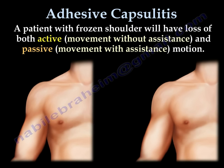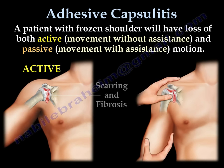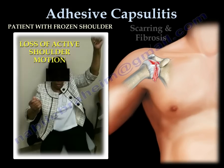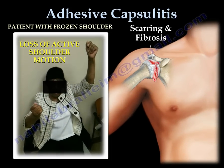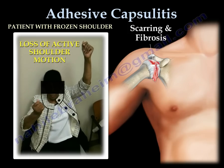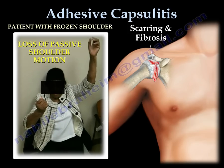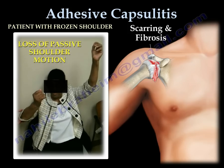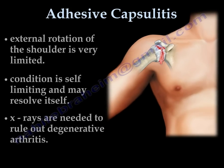A patient with frozen shoulder will have loss of both active and passive motion. With the scarring and fibrosis, the patient will lose active shoulder motion, and also the passive shoulder motion. The external rotation of the shoulder is very limited.